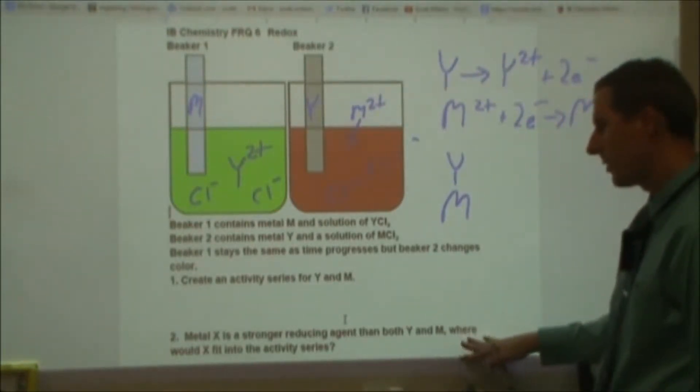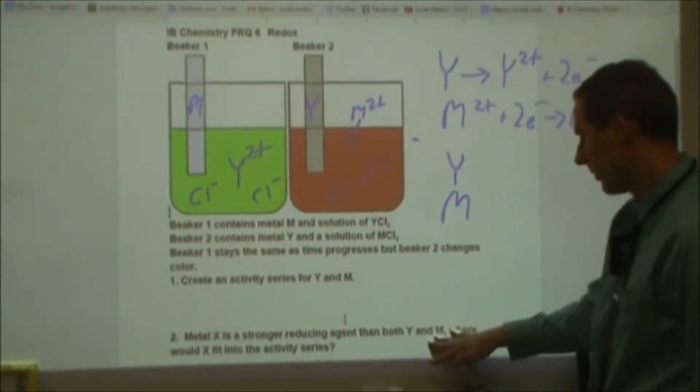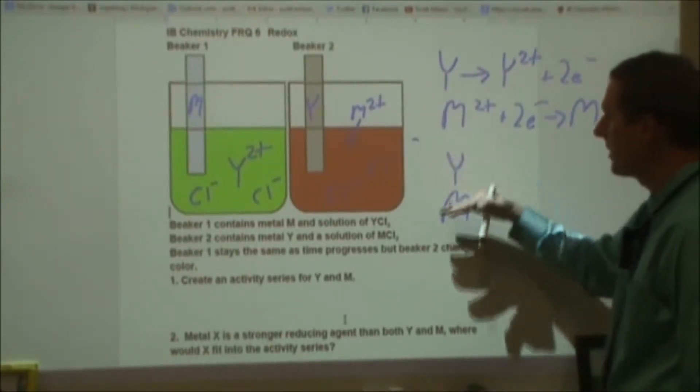Now then it says metal X is a stronger reducing agent, so we don't have X in either of these, but it says it's a stronger reducing agent than both Y and M, where would X fit into the activity series? So obviously it's going to be on top or below, the question is does this mean that X is more reactive as a metal or less reactive?